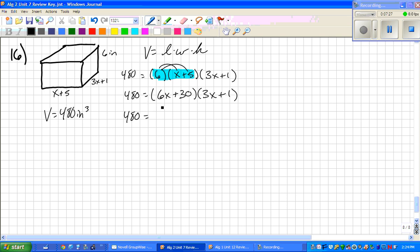So now we're going to FOIL. We still have the 480. We get 18x squared plus 6x plus 90x plus 30. So we're going to do two things. We're going to combine our like terms and subtract the 480 to the other side. So when we do that, we get 18x squared plus 96x minus 450.